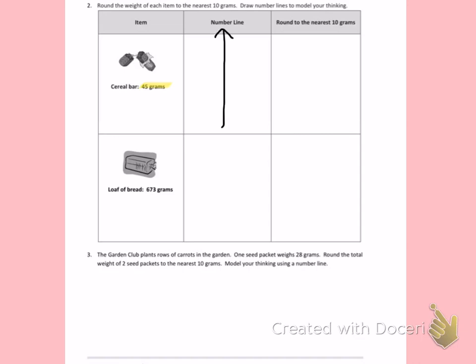First I have a cereal bar that weighs 45 grams. I'm going to draw a number line and think about what 10s 45 grams fits between. 45 grams fits between 40 and 50. My halfway number would be 45. 45 is also the amount that the cereal bar weighs. If I think about what we talked about in class today, 45 is halfway to the next number. So I am going to continue to round up. So I will round 45 to 50 grams.